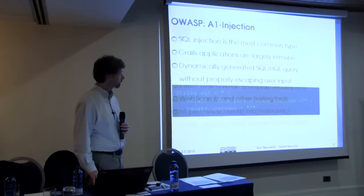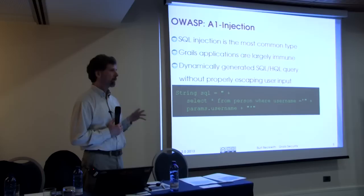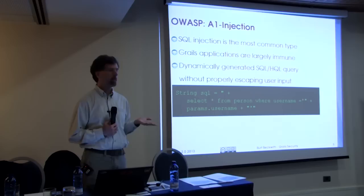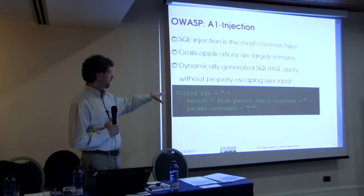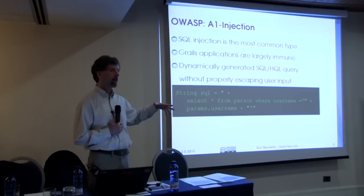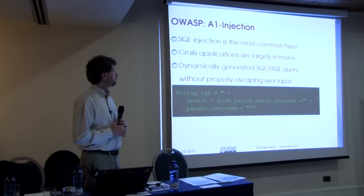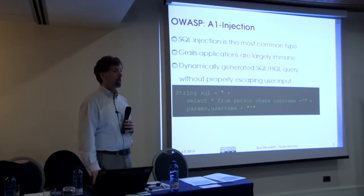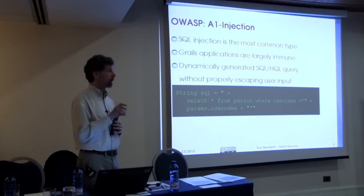The first and most severe risk this year is injection risks. The big one is SQL injection. If you concatenate SQL parts together into a string without escaping the data supplied by users, you open yourself up to a SQL injection risk. Luckily, you tend not to do that much in Grails because you would use a dynamic finder, criteria queries, or HQL — although if you dynamically build the HQL string, you can introduce a SQL injection risk.